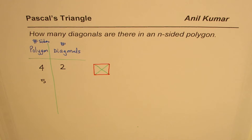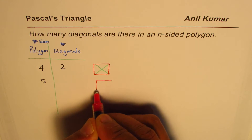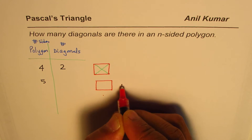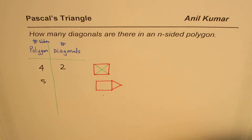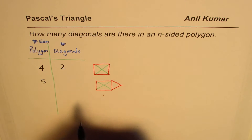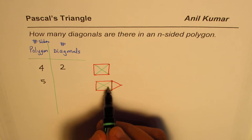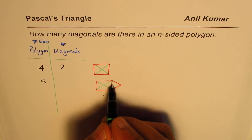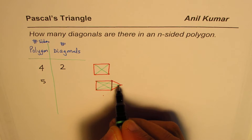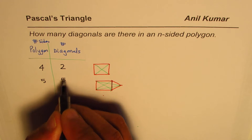If we have a pentagon — that is, a five-sided figure — how many diagonals are we going to have? Let me construct a pentagon. Counting the diagonals: the first two, then a third from another vertex, then a fourth, and a fifth. So we get five diagonals for a pentagon.